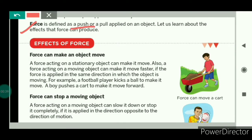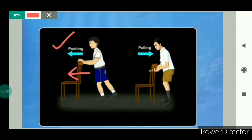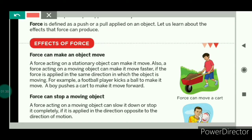Force is defined as a push or a pull applied on an object. Push means to exert force on any object so as to move the object away from oneself. And pull means to apply force on any object to move the object towards oneself. This figure clearly shows push and pull. So the force is a push or a pull applied on an object.